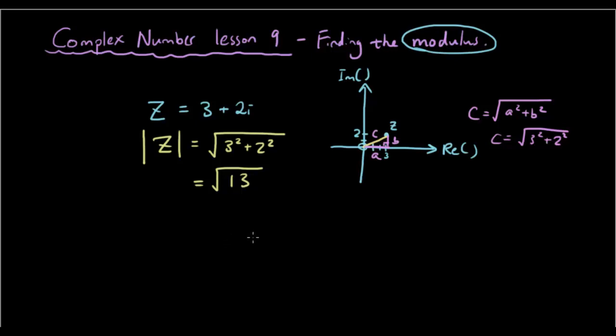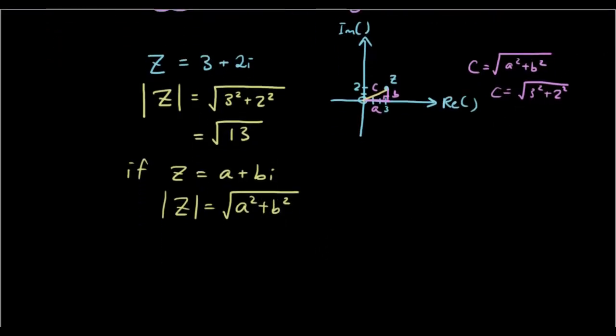Now, if we wanted to find a general formula for it, for example, if z was equal to a plus bi, then the modulus of z would be equal to the square root of a squared plus b squared. That's the general formula for it.